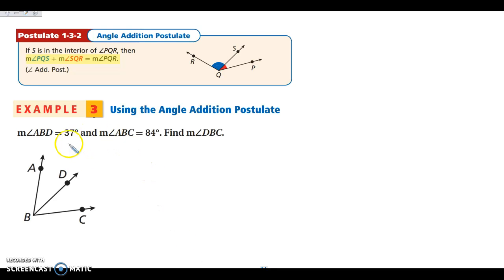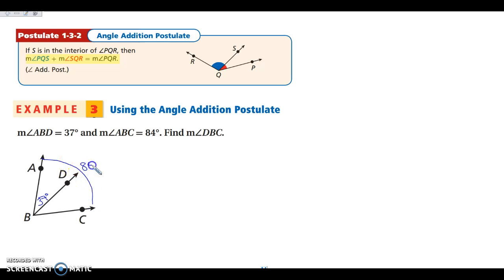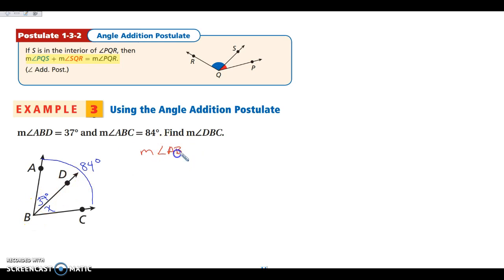Let's take a look at example three. I'm given that the measure of angle ABD is 37 degrees, so I'm going to write in that this is 37 degrees. The next one is angle ABC is 84 degrees, so this whole angle from here to here is 84 degrees. I want to find the measure of angle DBC. So the first thing I want you to do is set up your angle addition postulate equation. I'm going to start: the measure of angle ABD — B is in the middle because it is the vertex of that angle.